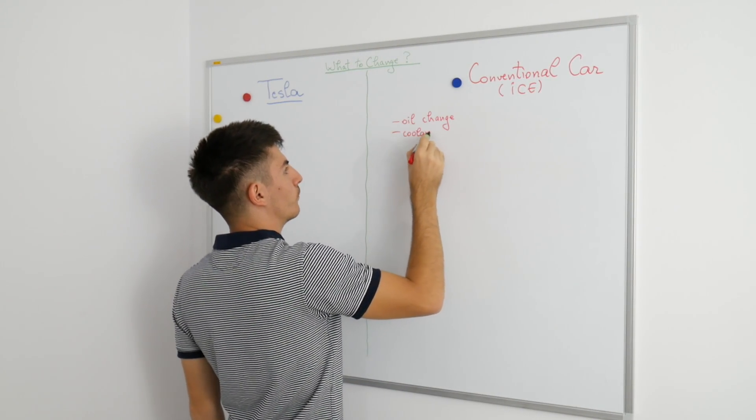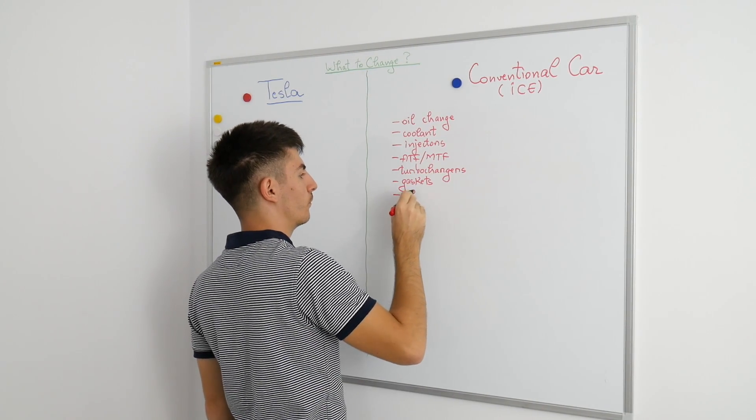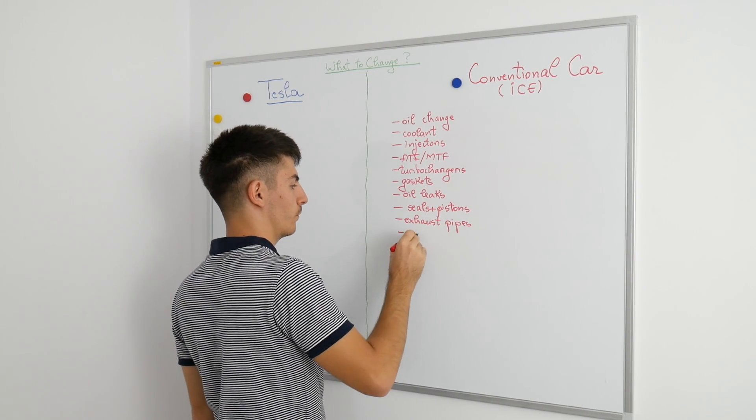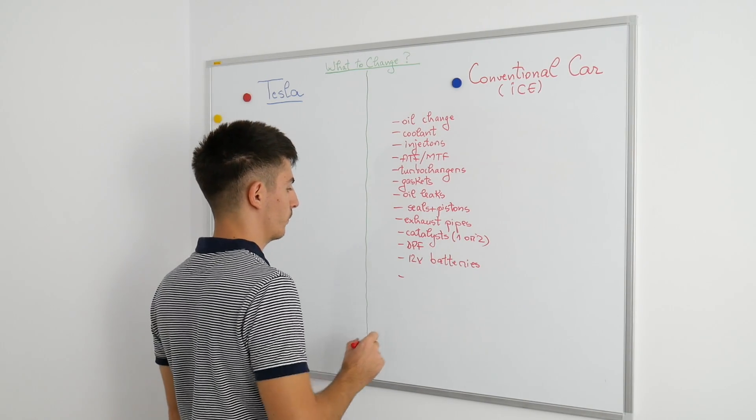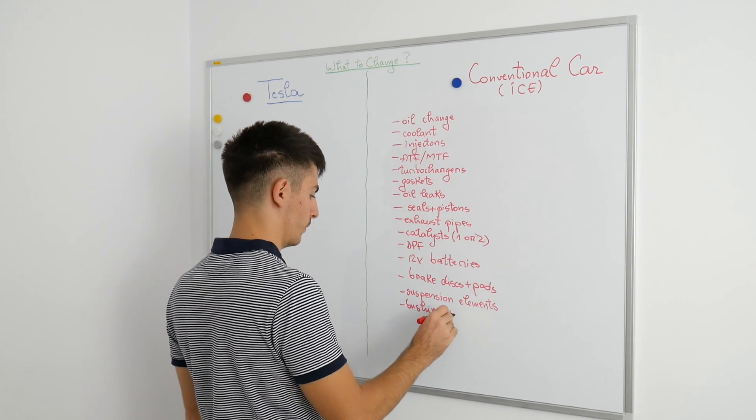In a traditional engine, there are lots of moving parts which can be expensive to repair or replace. We also have catalysts and DPF filters in diesel engines which generally have a lifespan of around 200,000 kilometers and cost over $2,000 to replace. You can see for yourself all the components that need maintenance in a conventional car.